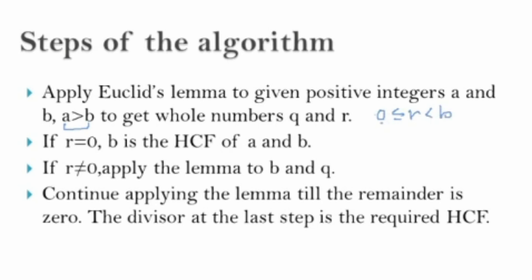Now r can be 0. When I am applying Euclid's division lemma I know that r has this condition. So r can be 0 or r can lie between 0 and b. See, if r is 0 the HCF will be b, the number we divided by. But if r is not equal to 0, I will apply the lemma on b and r. This is r, the remainder.